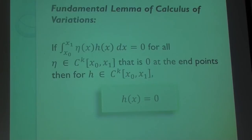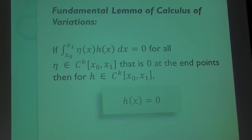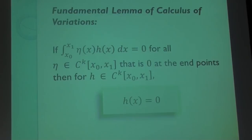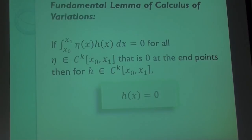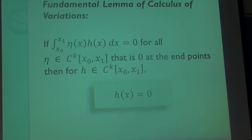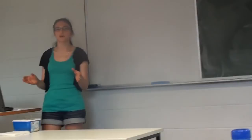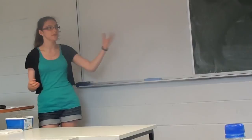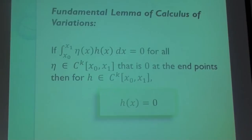The important point is this: if this integral on a closed interval is equal to zero, and the eta function — one of the functions in the integrand — is continuously differentiable up to a kth order on that interval but is also zero at the endpoints, then the other function h must be zero everywhere. So what this tells us to do in our derivation is to invent an eta function that fits those criteria, get to a point where we have an integral of eta times some other function equal to zero, and then apply the lemma to conclude that other function must be zero. That's our Euler equation.